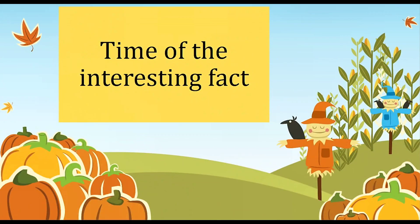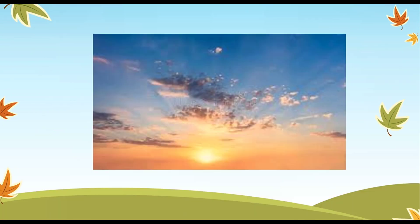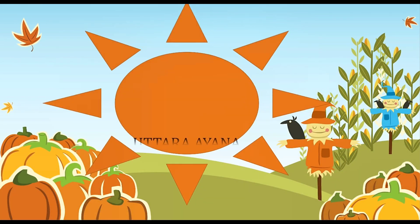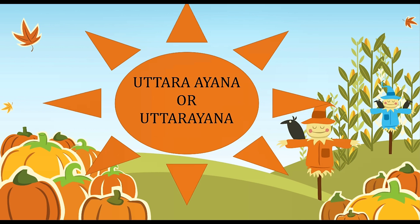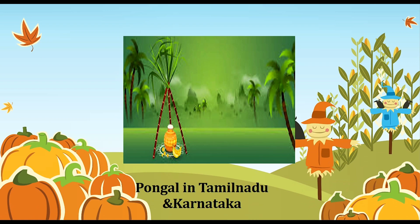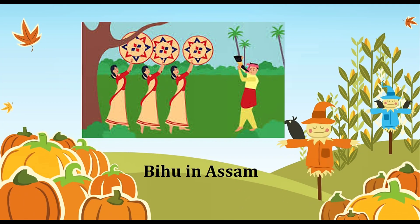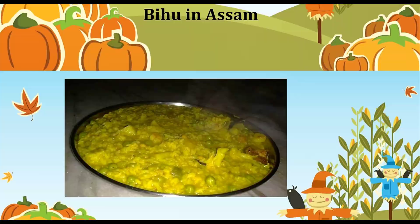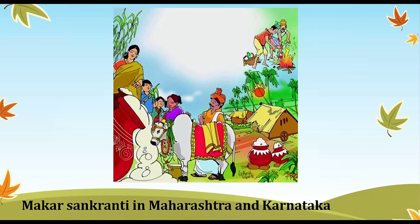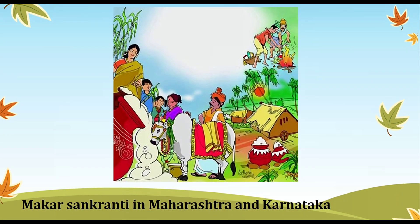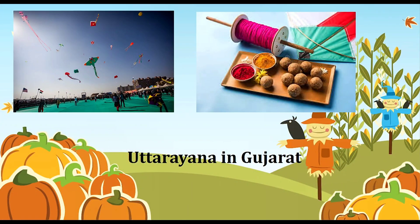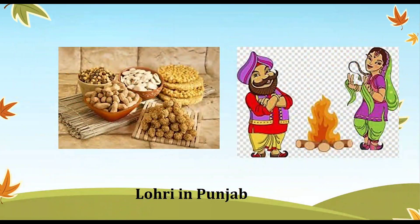Now it's time for the interesting fact. Since 'Uttar' means northward and 'Ayyan' means movement in Sanskrit, the phenomenon of phase reversal from southward to northward movement of the sun is called Uttarayan. It is celebrated as Pongal in Tamil Nadu and Karnataka, Bihu in Assam, Khechuri in Bihar, Makar Sankranti in Maharashtra and Karnataka, Uttarayan in Gujarat, and Lohri in Punjab.